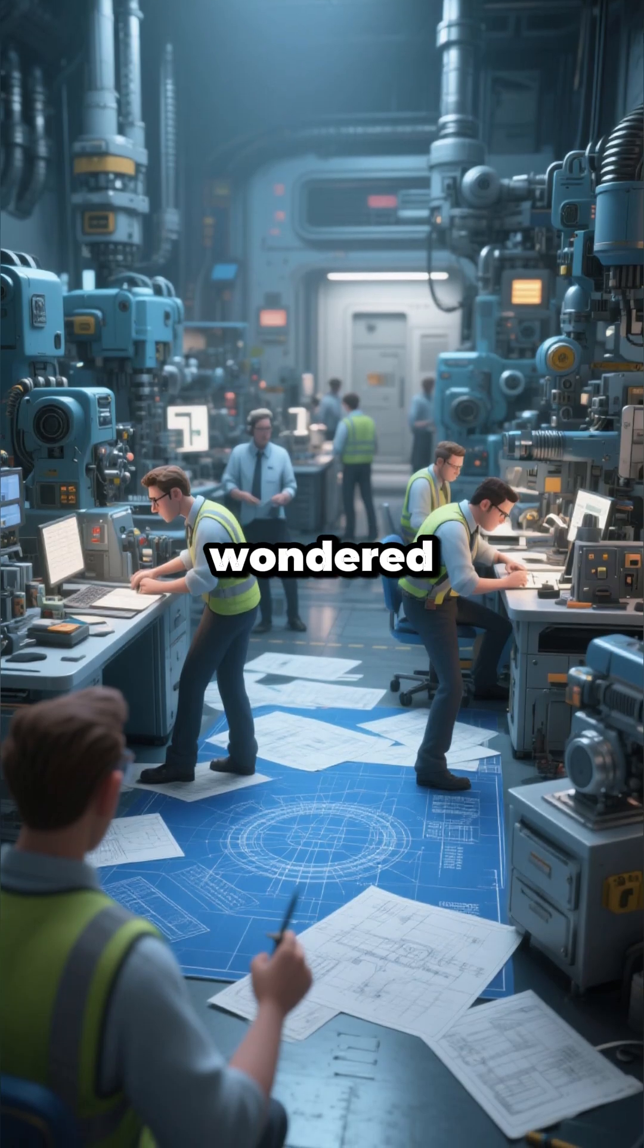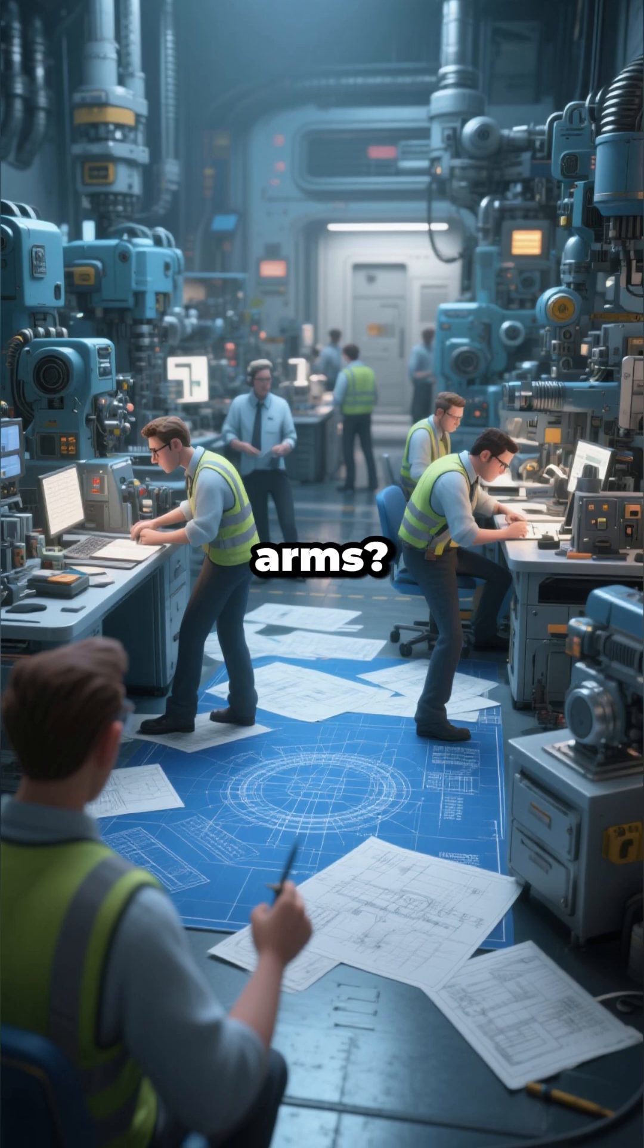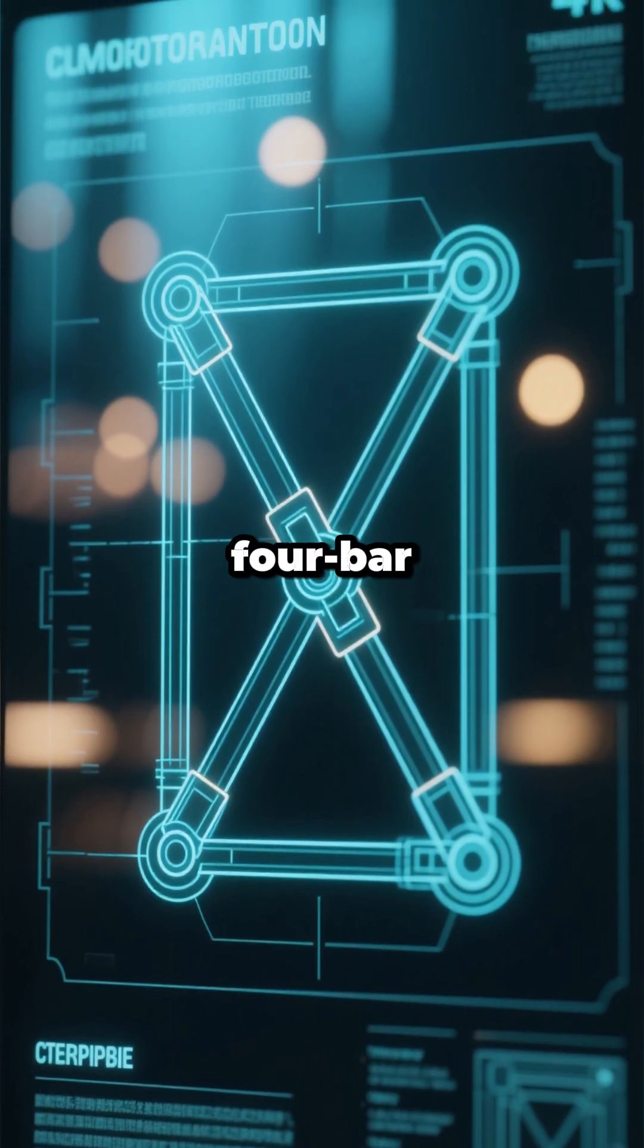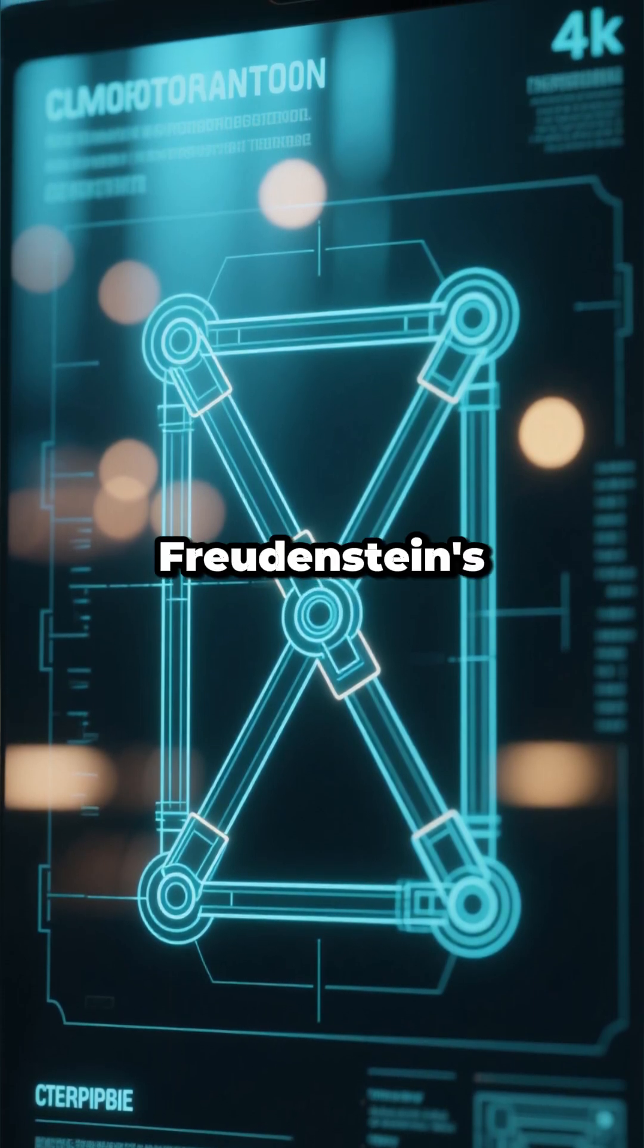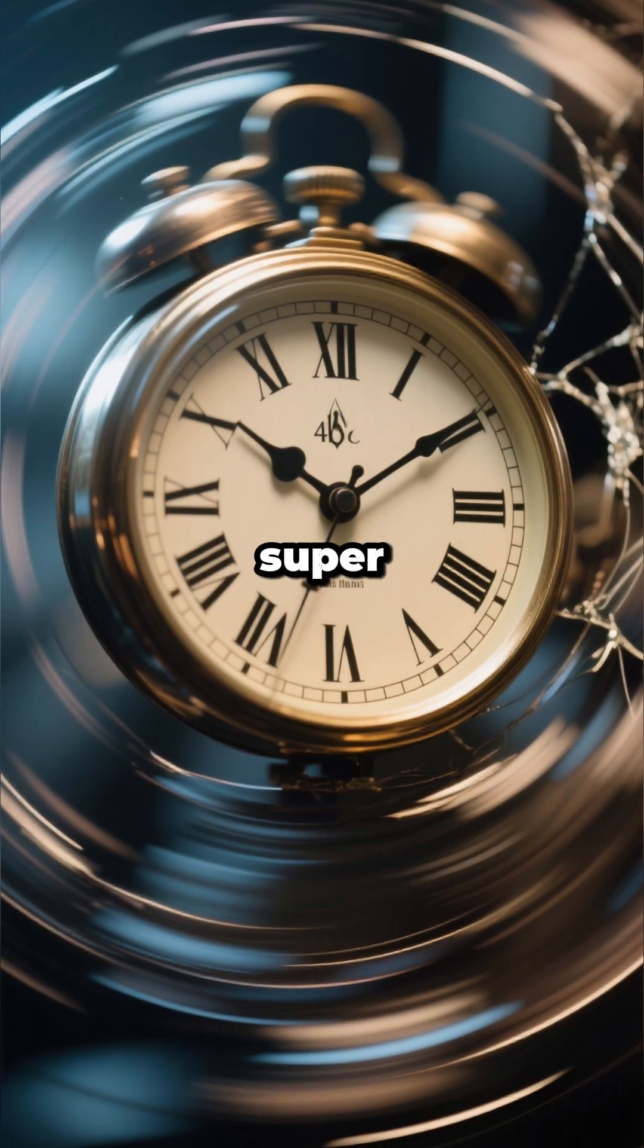Ever wondered how engineers design complex machinery like car transmissions or robotic arms? A key part of it comes down to something called a 4-bar linkage, and the magic formula that governs it is Freudenstein's equation. Let's break down how we get there, super quick.